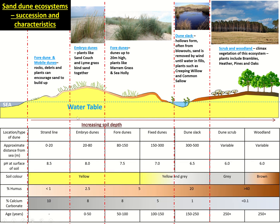All these features change as you go back from the sea. The pH would decline as you get less calcium carbonate from shells in the soil. The soil would increase in colour from yellow through to brown as more organic matter is added. You'd have more humus in the soil and less calcium carbonate. Those are the major changes across the sand dune system.